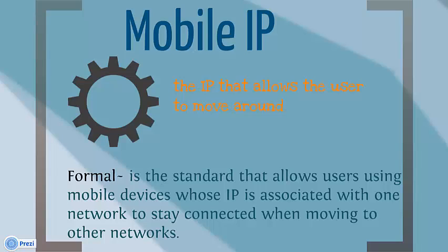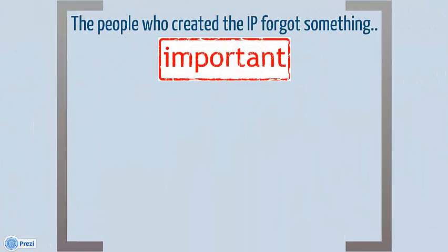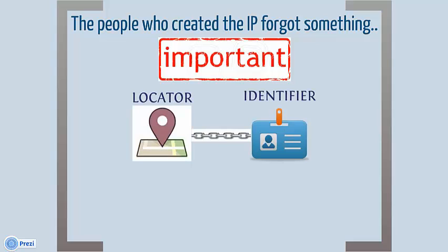Mobile IP is simply the IP that allows the user to be free to move around. For a more formal definition, it is the standard that allows a user using a mobile device whose IP is associated with one network to stay connected when moving to other networks. The people that created IP designed it to be both the locator and the identifier of a node, and then binded them together. But what Mobile IP did is separate this binding.